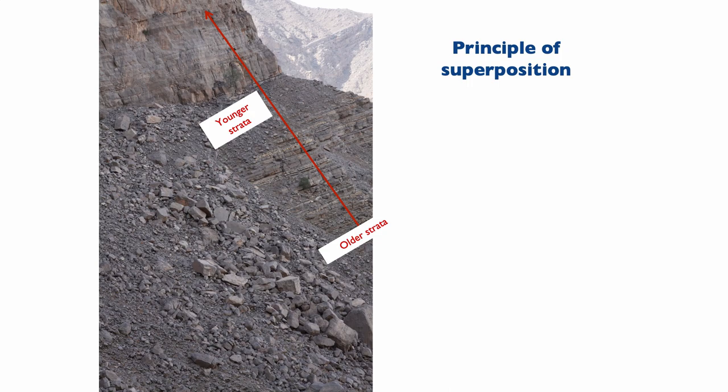Just by looking at the layers of the Dolomites, we can already know where the older strata are and where the younger strata are. This is really the only thing we can do with lithostratigraphy to determine time or an age.